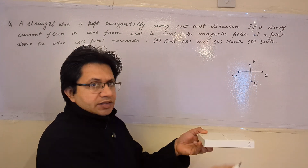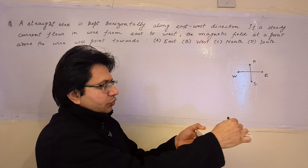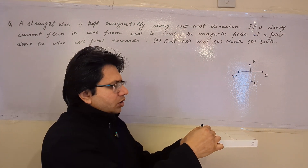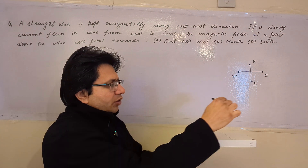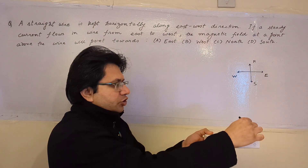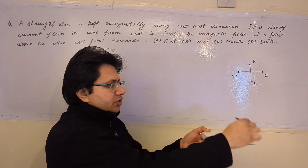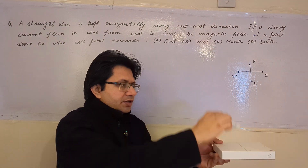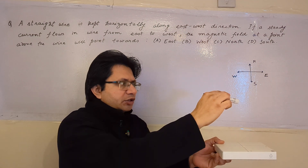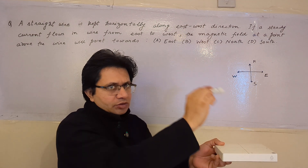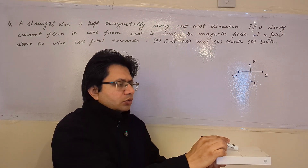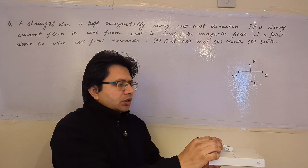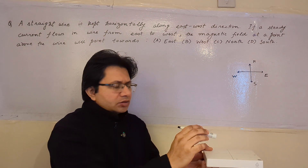The current is flowing in this particular direction — from east to west — and the point is here, above the wire. At this particular point above the wire, we have to find out the direction of the magnetic field. There are many ways to solve this problem, and I am going to show two methods.